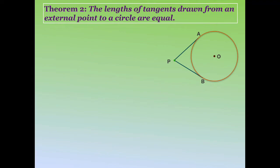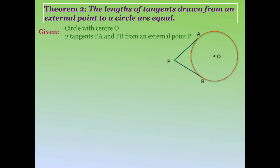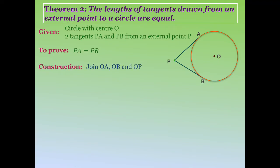The theorem says that the lengths of tangents from an external point to a circle are equal. We are given a circle with center O and two tangents PA and PB from external point P, and we need to prove PA equals PB. For this we join OP, OA, and OB, giving us two triangles: triangle OAP and triangle OBP.